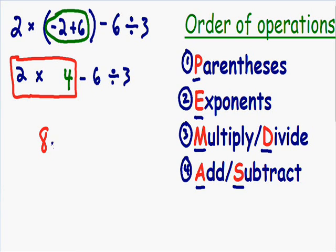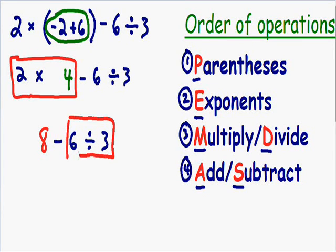The rest of our expression stays the same — minus 6 divided by 3. We can't move on to adding and subtracting yet because we still need to divide. 6 divided by 3 is equal to 2, so we now have 8 minus 2. Moving to our last order of operations, 8 minus 2 is equal to 6.